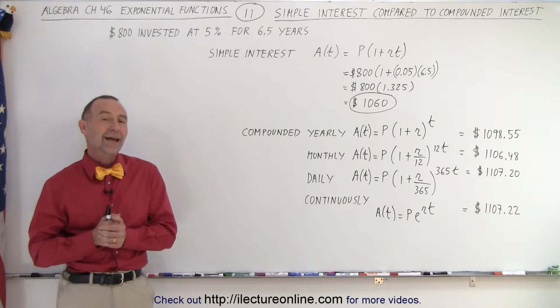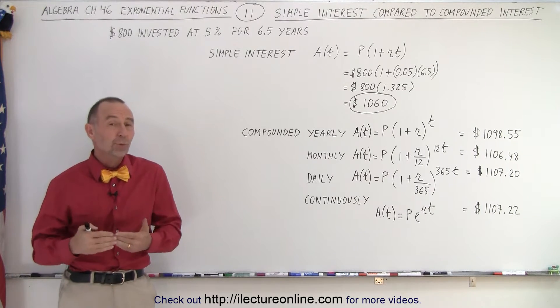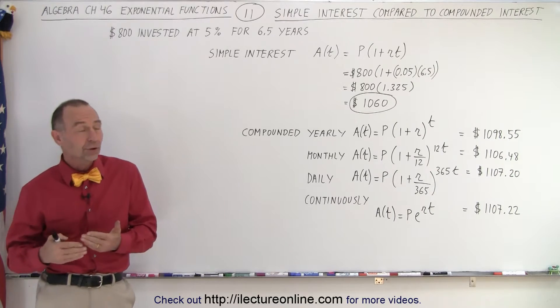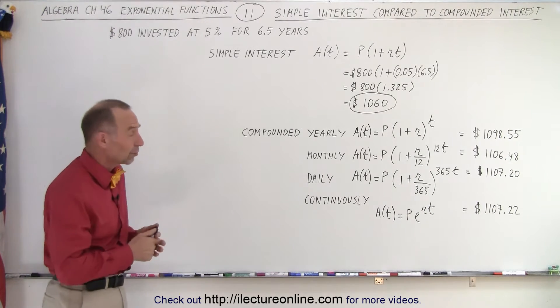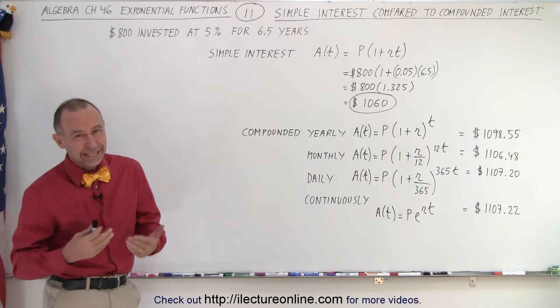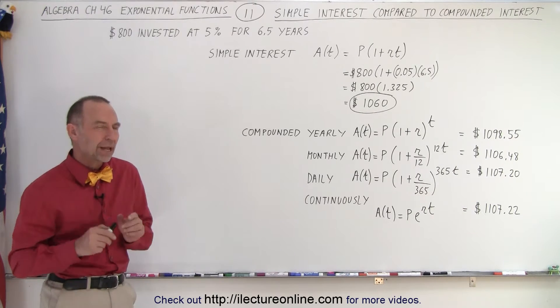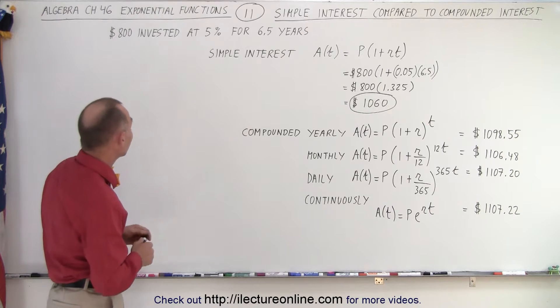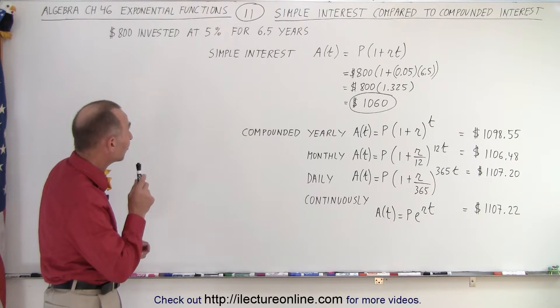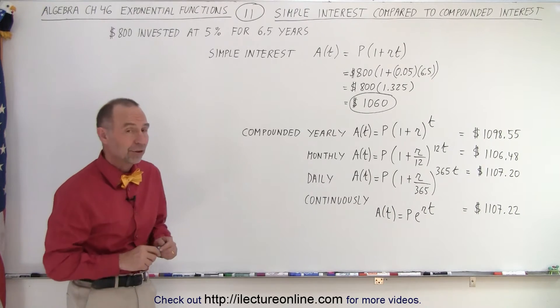Welcome to our Lecter Online. Now let's compare the various ways in which interest can be earned. We can do it using simple interest or compound it either yearly, monthly, daily or continuously. And let's compare the results on the same investment, $800 invested at 5% for 6.5 years.